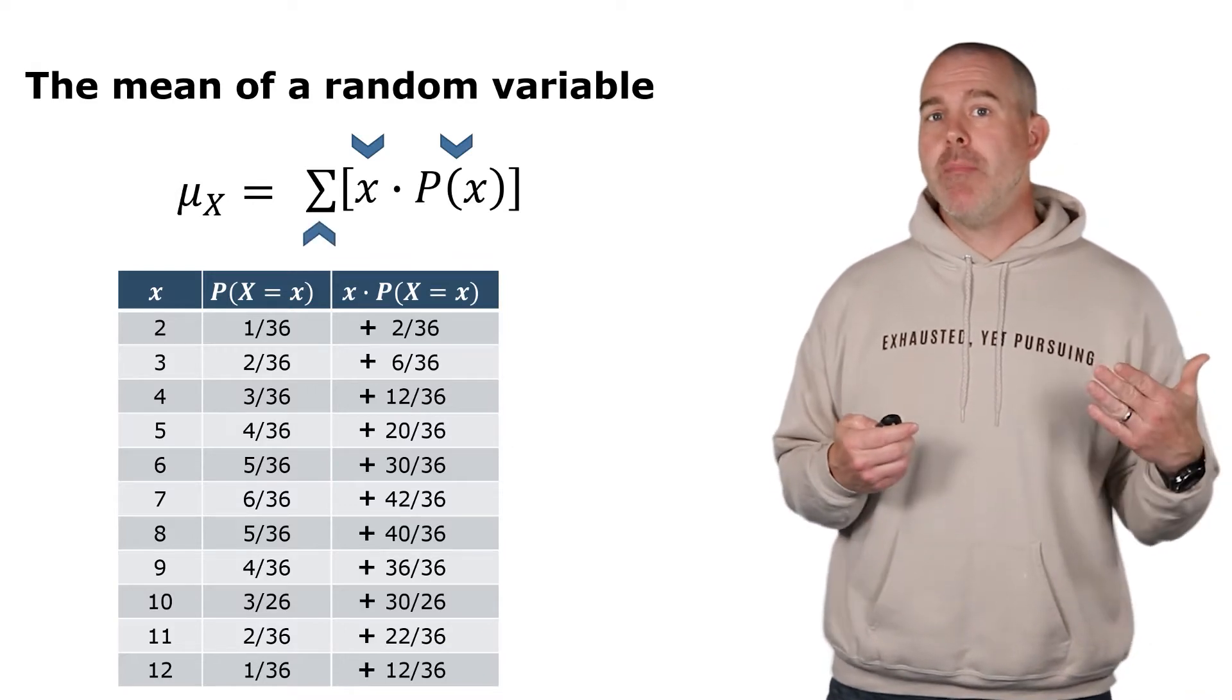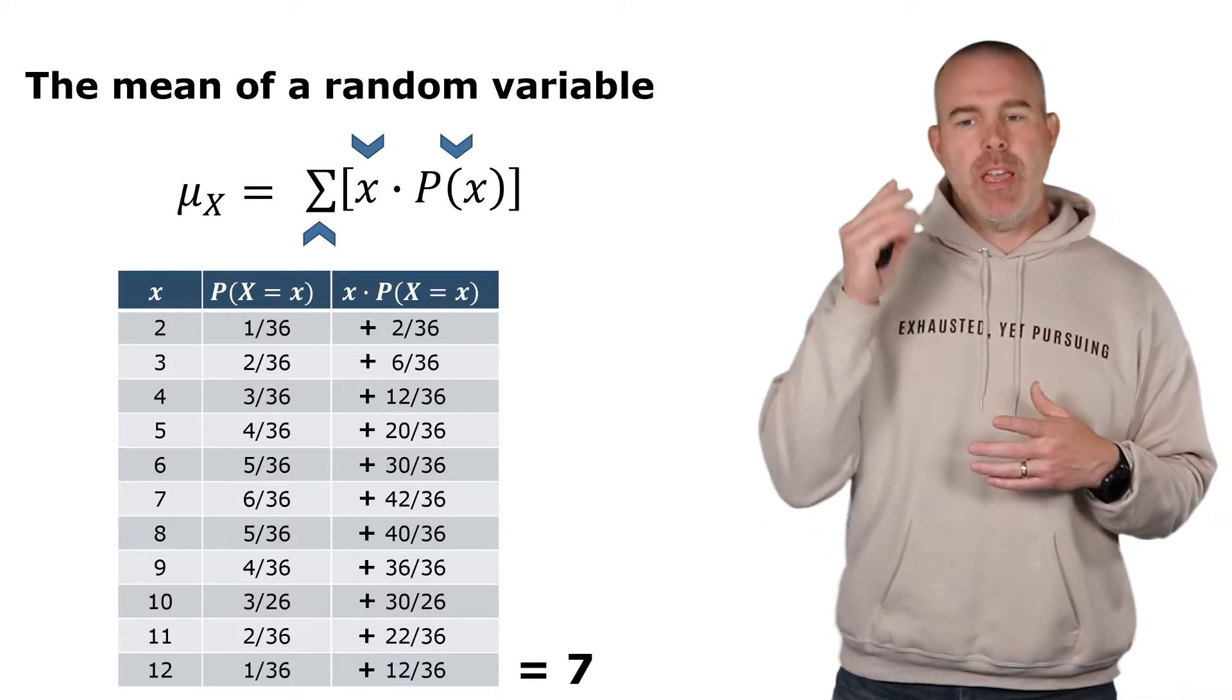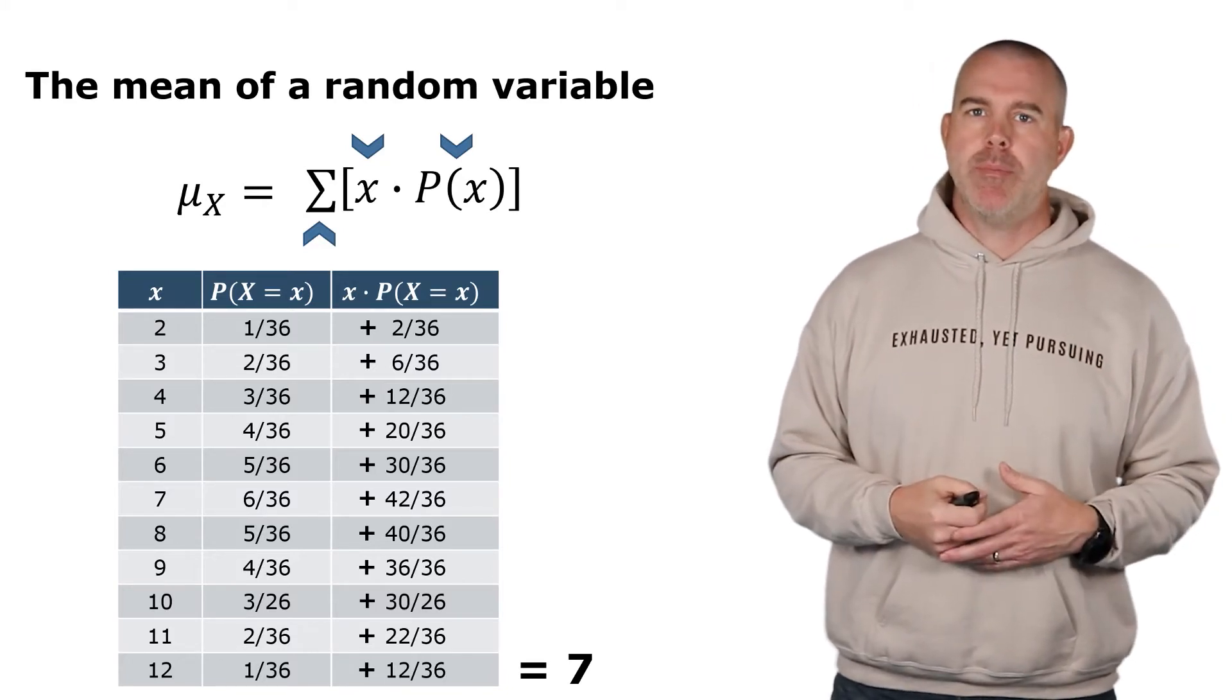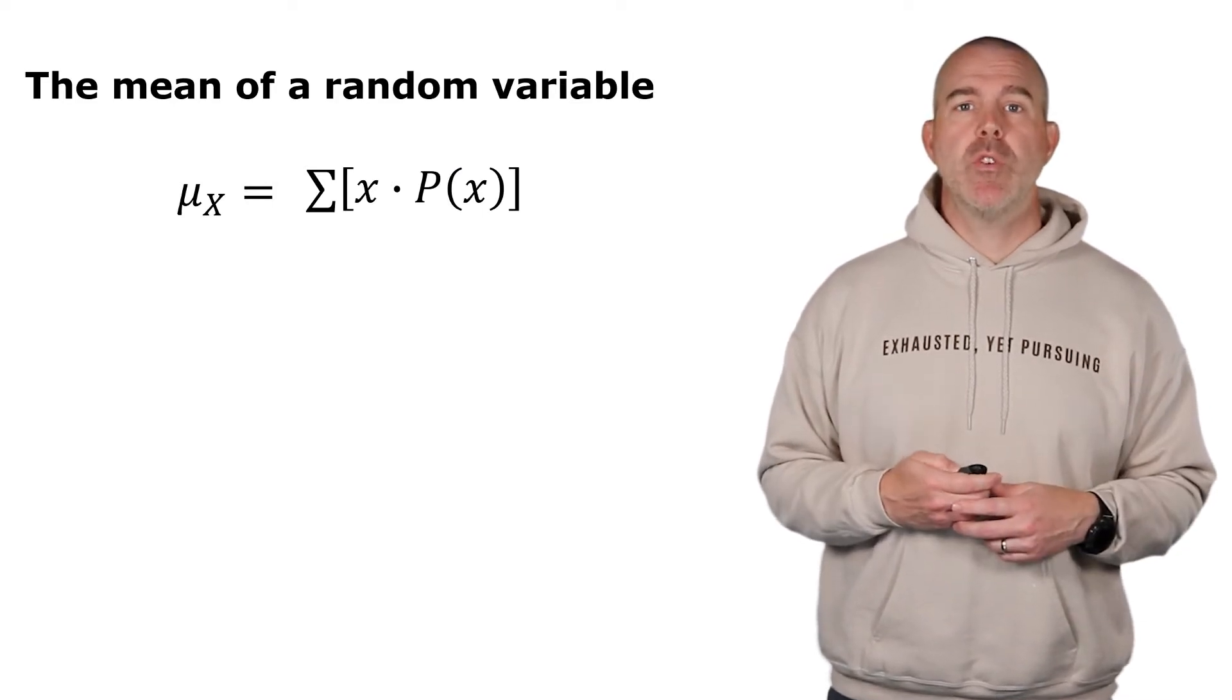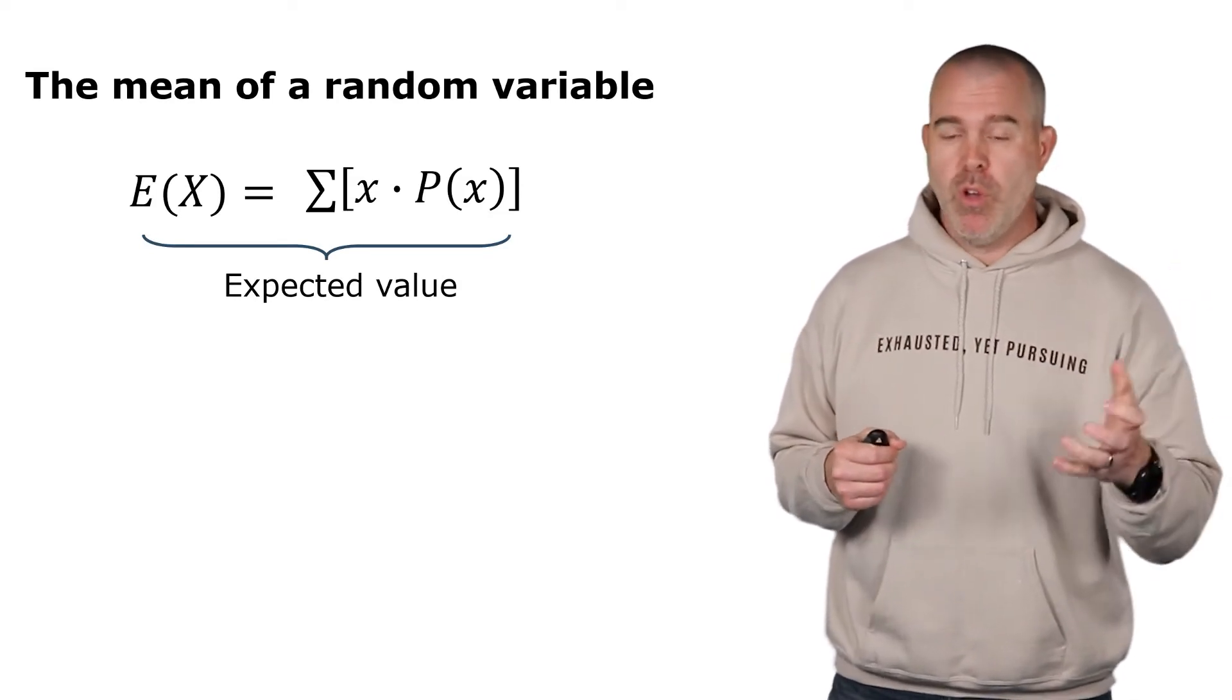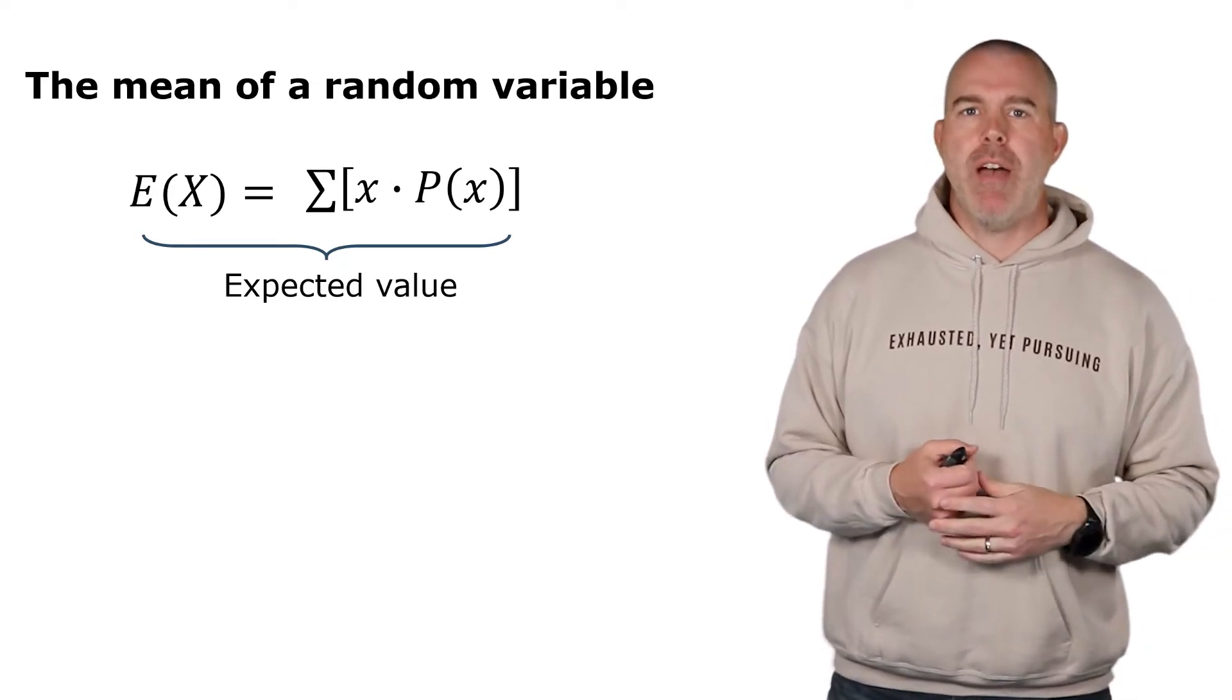And then that Greek letter sigma means you add them all up. So you add all of those up. That's how you get that seven. You take the value times its corresponding probability, add them all up. You get the mean of that random variable. Now, other notation here, this is often sometimes referred to as the expected value: E(x), the expected value. Doesn't mean that when I roll two dice again that I can expect a seven, but it's like the long-term average expected value. It's a long-term average.